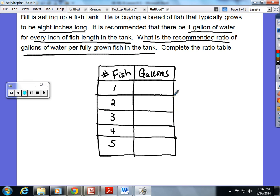You know that one fish typically grows to be eight inches. One fish is eight inches and it's recommended that there be one gallon of water for each inch of fish. So if there's eight inches here for one fish, that means I need eight gallons. Two fish, 16 gallons.